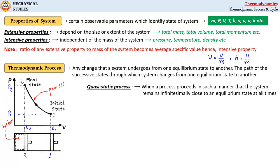For a process to be quasi-static it has to be carried out very slowly. That means infinite slowness is a characteristic feature of quasi-static process.